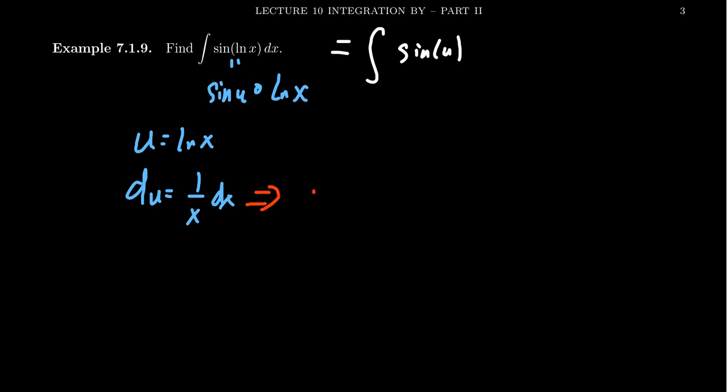If you solve for dx, you would get dx equals x du, which is a little problematic here because the whole point of switching the variables is to switch all the x's to u's. How do you deal with this residual x that's hanging out there?